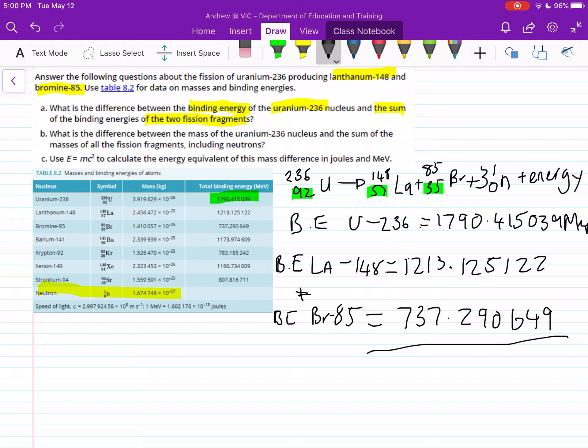These two together, the binding energy, the sum of the binding energy of the two fission fragments, what it splits into. So if you add all this up, you should get, just looking at the value I worked out earlier, 1950.415771 mega electron volts.